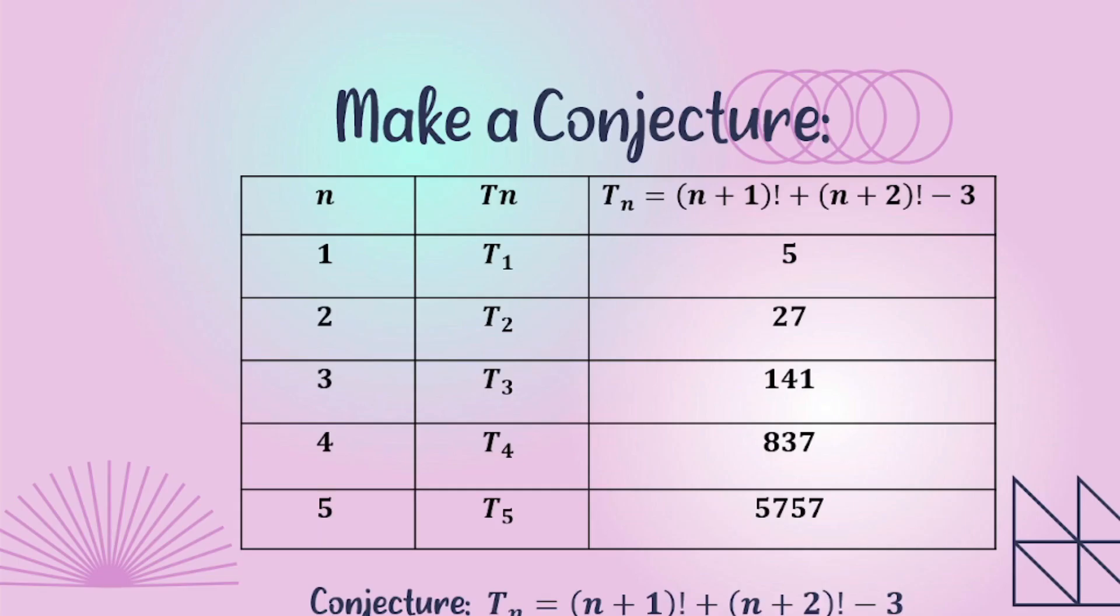Make a conjecture. In making our conjecture, we use the formula t sub n equals (n+1)! + (n+2)! - 3. We use this formula to get the values of our sequence.